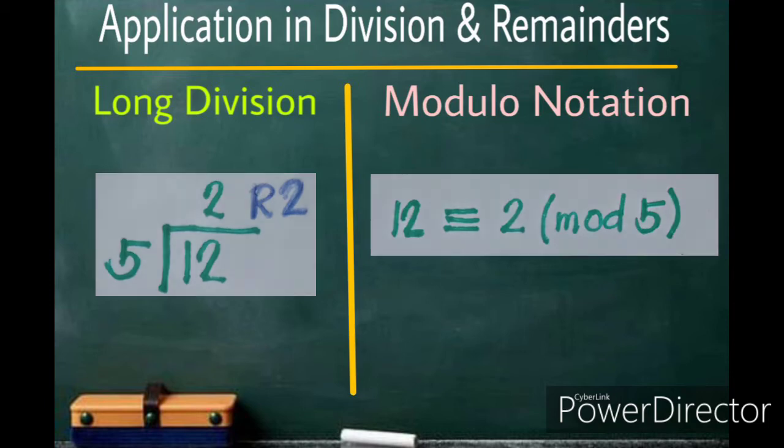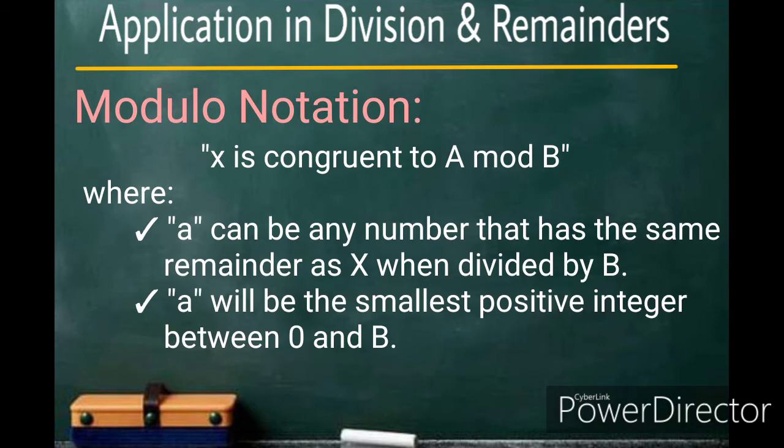Remember that, when working with Modular Notation, a common phrase we use is x is congruent to a mod b, where a can be any number that has the same remainder as x when divided by b. And also, a will be the smallest positive integer between 0 and b.